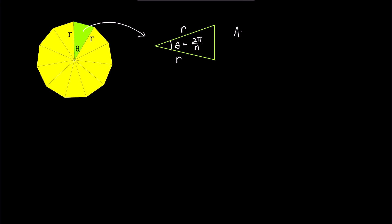Applying the formula for the area of triangle, which is half times a times b times sin theta to the left green triangle, this area becomes half times r times r times sin 2π over n. Or when simplified, half times r squared times sin 2π over n.